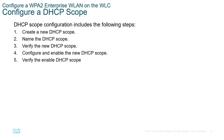Going to our final session — we've created an interface, and we are now going to configure a DHCP scope. The steps are: create the scope, name the scope, verify, configure and enable the scope, and verify and enable the scope.